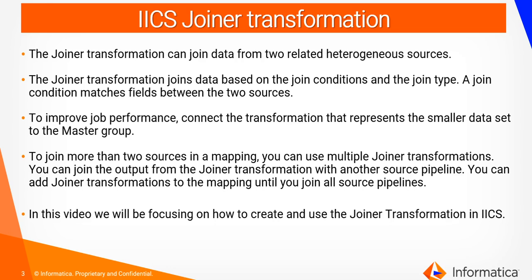When you link a transformation to the joiner transformation, it is connected to either the master or detail group. To improve job performance, we usually recommend connecting the transformation that represents the smaller dataset to the master group and the larger dataset to the detail group. To join more than two sources in the mapping, you can use multiple joiner transformations and continue until you join all the source pipelines.